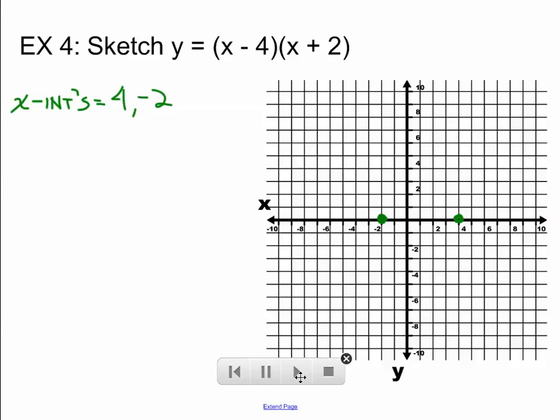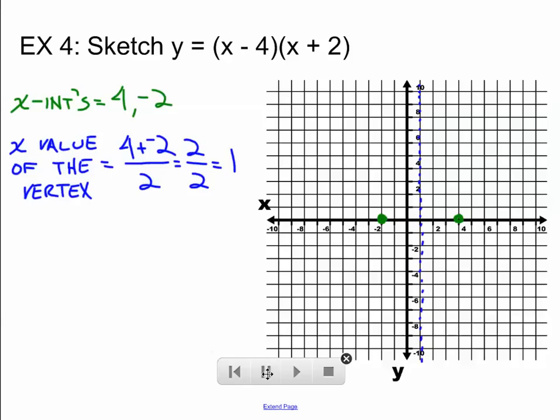Now, the next thing we need to know is where the vertex is. Well, because parabolas are symmetrical, I know that the x value of the vertex is exactly halfway between those two x-intercepts. So, the easiest way to find out halfway between them is to add them up and divide by 2. So, there you see my axis of symmetry. I know that my vertex falls somewhere on this dotted blue line. Halfway between negative 2 and positive 4. Very simple math here. Don't make it tougher than it is. Add the two x-intercepts, divide by 2 every time.